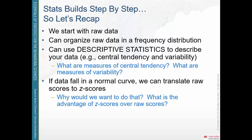In chapter two, we talked about organizing raw data into a frequency distribution — a chart that has all of the possible scores in one column, and the number of people who have that score in the column next to it. We could also turn our frequency distribution into a histogram or a bar graph, putting the numbers into a graph. Either way, we're organizing our data.